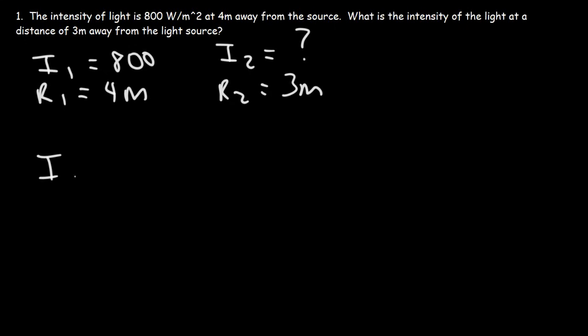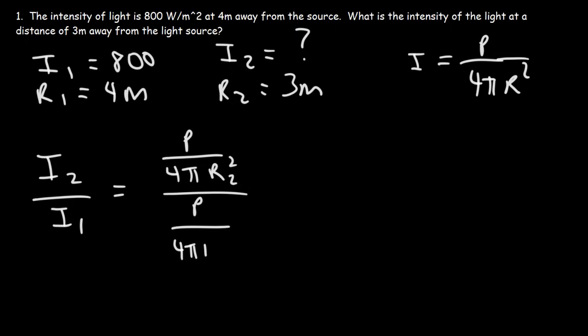So let's write a ratio between I₂ and I₁. Remember, the intensity is the power divided by the surface area. So it's power over 4πr². So I₂ is going to be P over 4πr². Now, the light bulb is the same, so we don't need to write P₂ and P₁ for P. We could just leave it as P, because the light bulb is not changing. However, R changes. So I₂ is going to be P over 4πr₂², and I₁ will be P over 4πr₁².